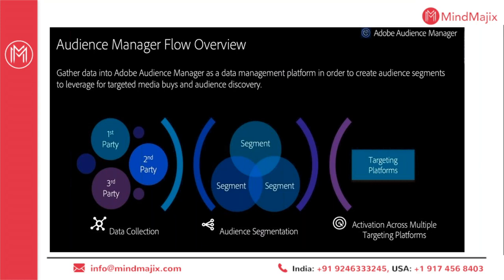First-party data is what is already in market. Second-party data is any partner's first-party data that is mutually exchanged between two parties based on an agreement. Third-party data is collected from various sources and can be subscribed to at a particular cost. All the data is collected in Audience Manager and then segmented from different sources. For example, I can combine data points from first-party data and merge with third-party data to understand what type of segment size I will have, or create a segment using only first-party data for specific audiences.